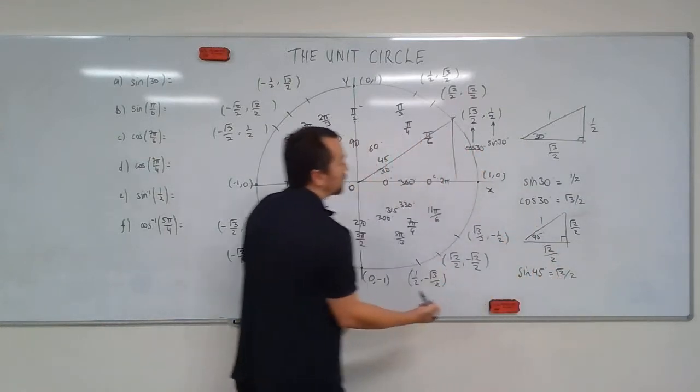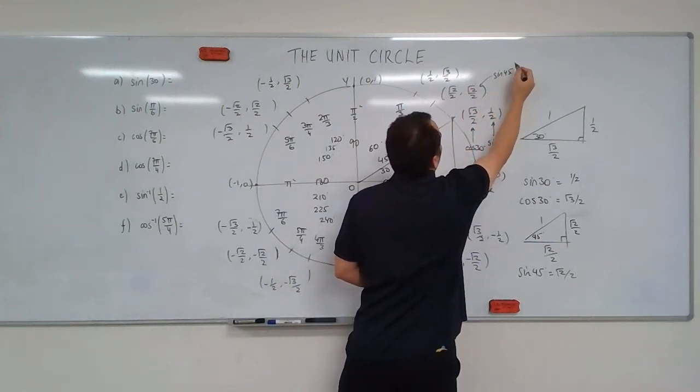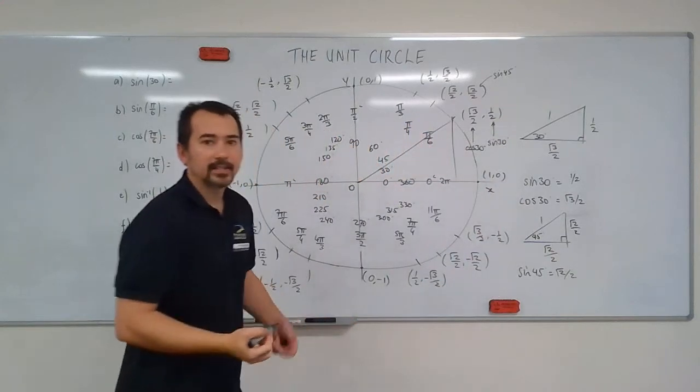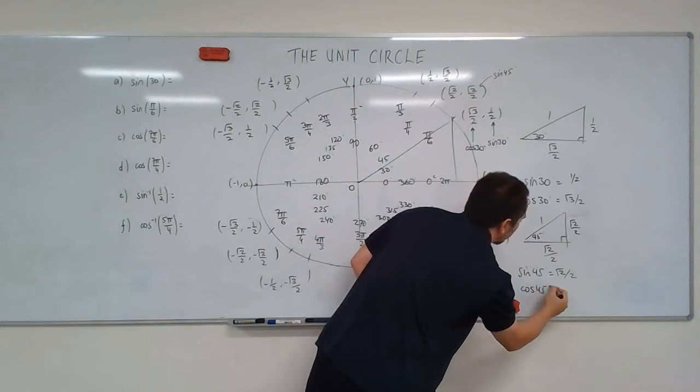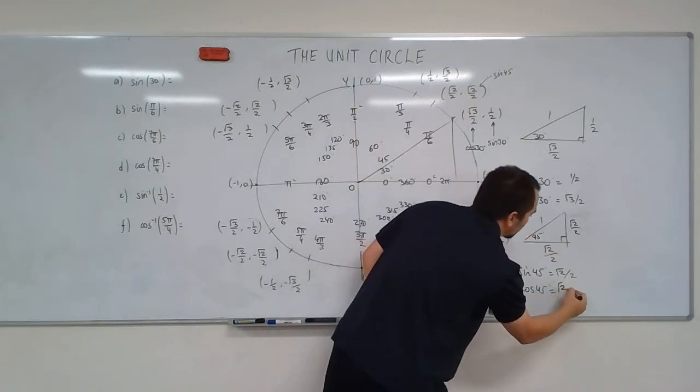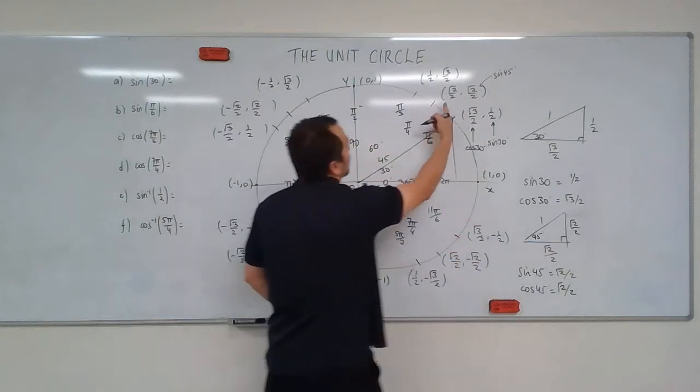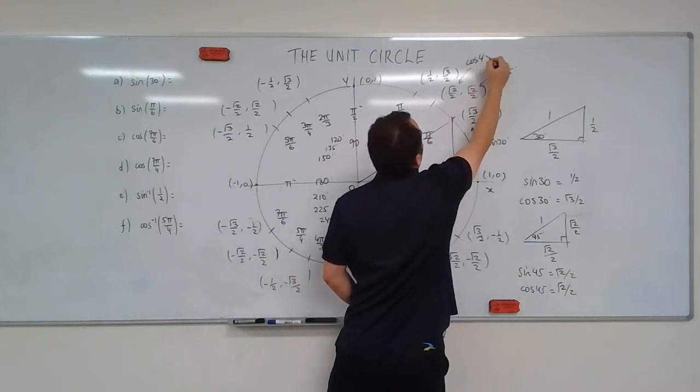And the same would be true for cosine as well. Cosine 45 degrees is equal to the adjacent, divided by the hypotenuse, also root 2, divided by 2. So, this horizontal distance is my cosine value. That's cosine 45 degrees.